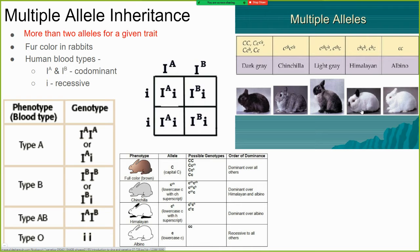Another example is human blood type. There's an allele for type A blood, an allele for type B blood, and an allele for type O blood — three different alleles. Type O blood can be given to anyone. Because there are three different alleles, there are several different blood types you can have. That's what we call multiple alleles.